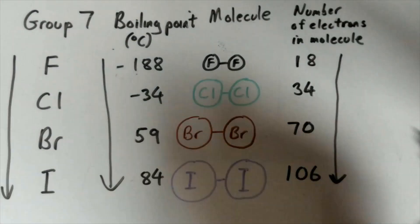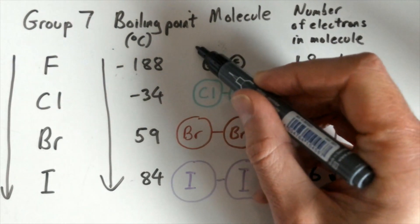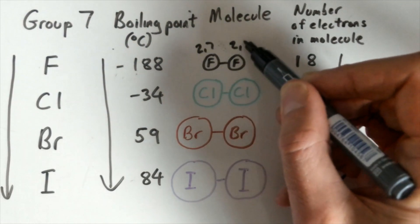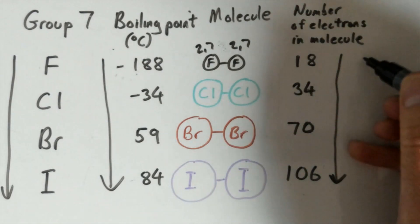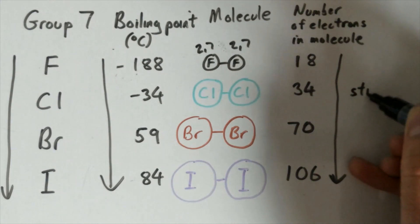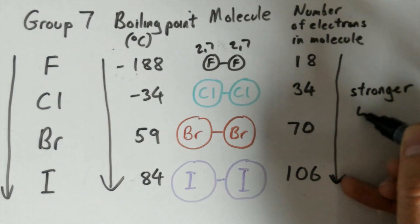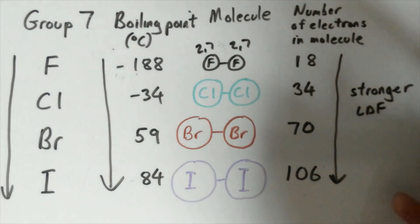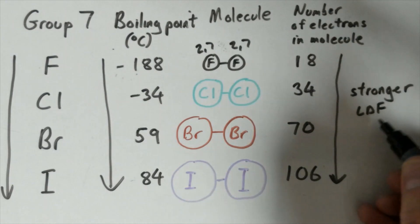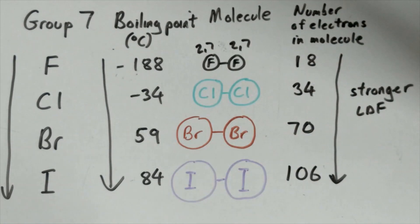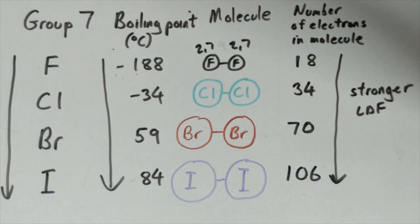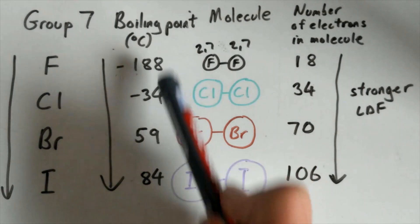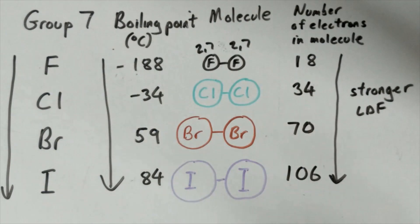Each fluorine atom had the electron arrangement 2,7 before it paired up to form the diatomic molecule. The more electrons you have in the molecule, the stronger the London dispersion forces between the molecules — not between the atoms, as we have covalent bonds between the atoms. So as atom size and molecule size increases and the number of electrons increases, we get higher boiling points because we have stronger LDFs.